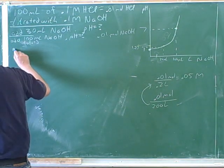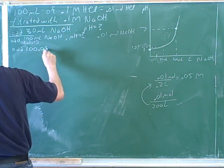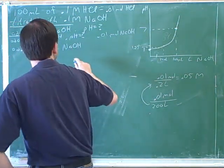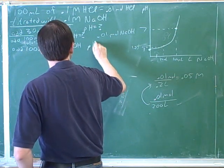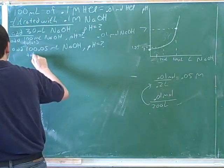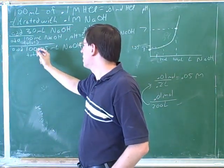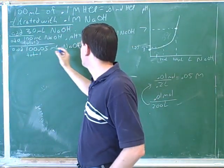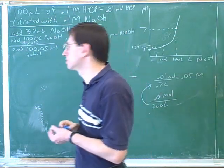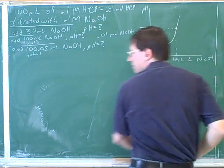Let's do 100.05 milliliters of sodium hydroxide — this will be the total. So let's say that starting from zero, we've added 100.05 total milliliters of sodium hydroxide to the same solution. And we want to find the pH.